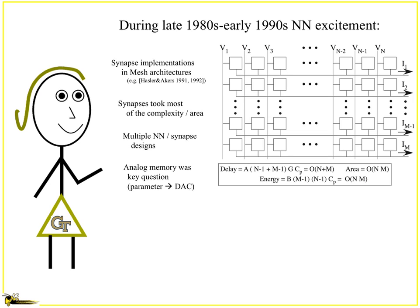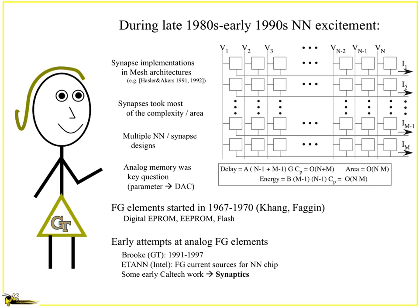There were multiple neural network and synapse designs, but the issue was always analog memory and how do you approach that. It turns out that it basically either meant you had a DAC or a refreshable structure or a number of things that were really difficult. As people had talked about things like floating gate elements, though, they're the core elements of EEPROM and flash. This started in 1967 and 1970.